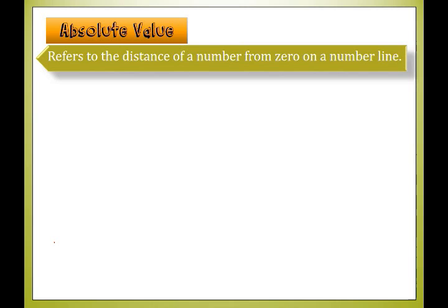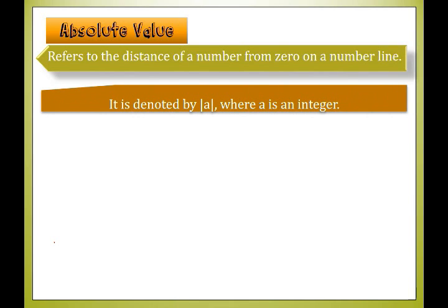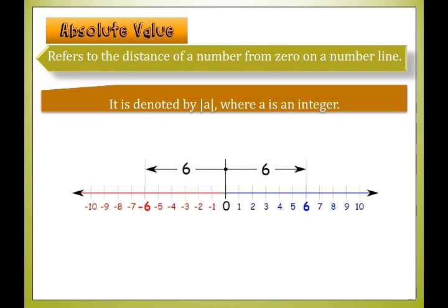Absolute value means how far a number is from 0 on a number line. It is denoted by the absolute value of a, where a is an integer. The bar symbols on both sides of a are the symbols we use for absolute value. Consider this number line — positive 6 is 6 units away from 0, and negative 6 is also 6 units away from 0. So the absolute value of 6 is 6, and the absolute value of negative 6 is also 6.